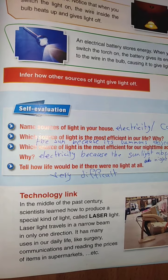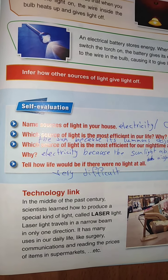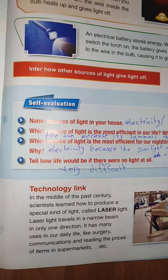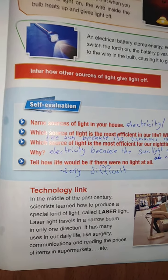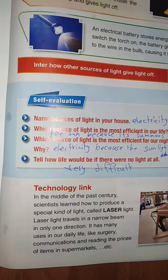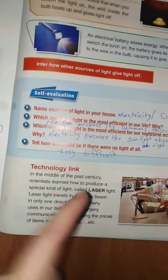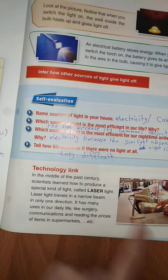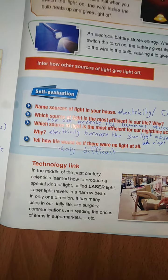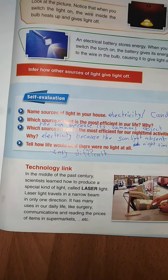The last question: tell how life would be if there were no light at all. It would be very difficult — we cannot see anything. Here we also have laser light, which is also an artificial light.